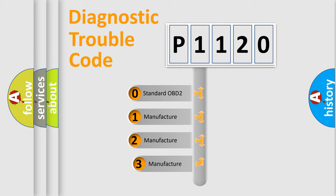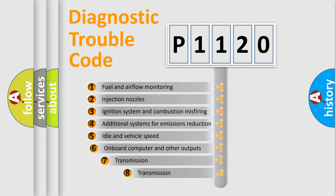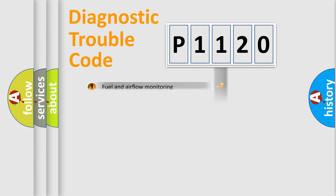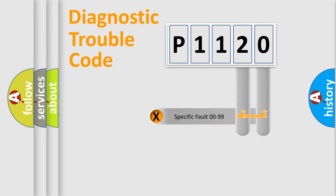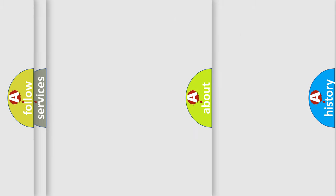If the second character is expressed as zero, it is a standardized error. In the case of numbers 1, 2, or 3, it is a manufacturer-specific error. The third character specifies a subset of errors. The distribution shown is valid only for the standardized DTC code. Let's not forget that such a division is valid only if the second character code is expressed by the number zero.